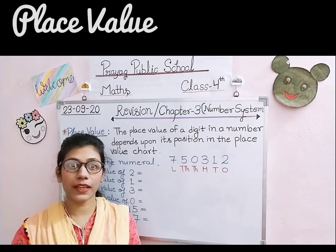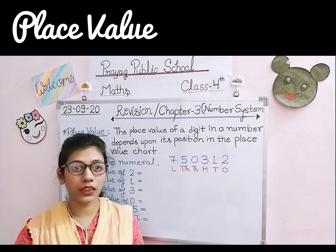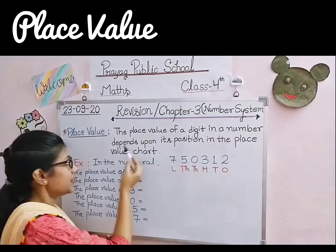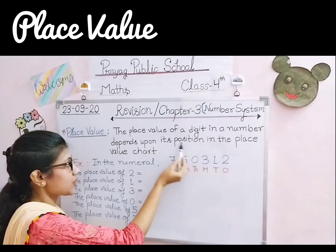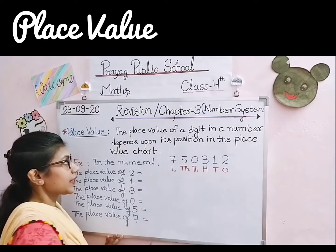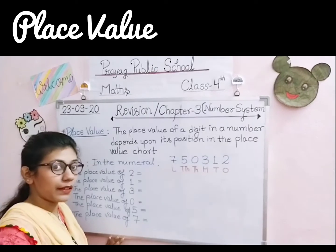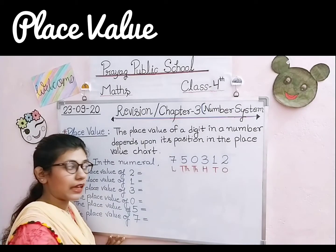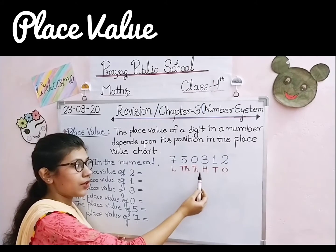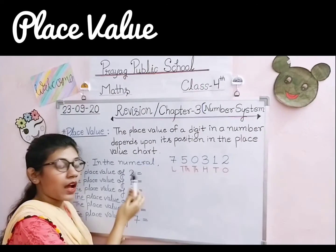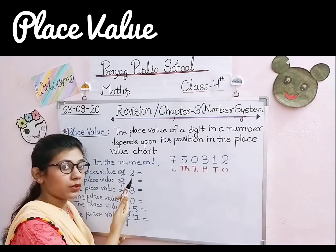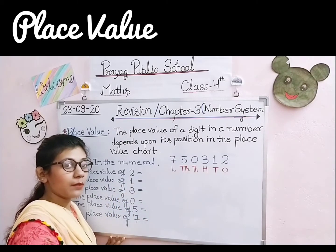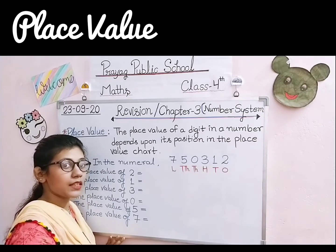अब हम पढ़ते हैं: What is place value? Place value की क्या definition होती है? The place value of a digit in a number depends upon its position in the place value chart. किसी भी digit की place value place value chart पर depend करती है। Place value chart में ones, tens, hundreds, thousands, ten thousands, lakhs, ten lakhs होते हैं। हम दिए हुए number में जितने भी digits होते हैं उन्हें place value chart के according पहले arrange करते हैं, फिर हम देखते हैं कि हर एक digit की place value क्या है।